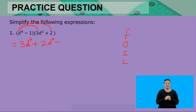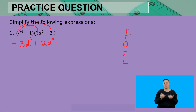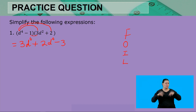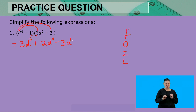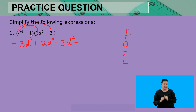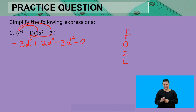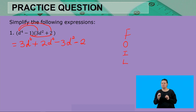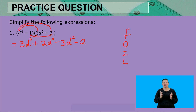1 × 3 = 3, and because 1 has no variables, we take the variable from 3d² as it is: -3d². Lastly, still subtracting, -1 × 2 = -2. The expression is now arranged in descending order of powers of the variables, which is the correct form.